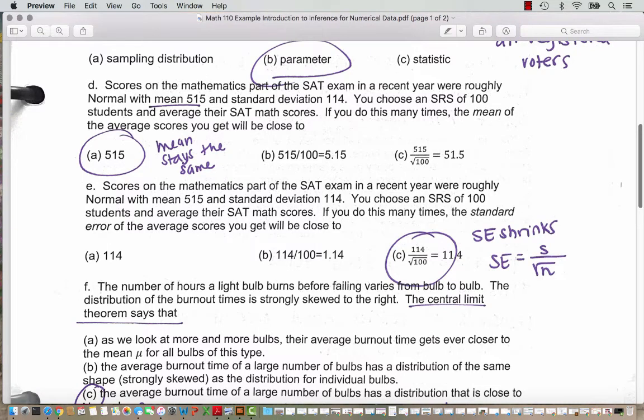Question D. Scores on the mathematics part of the SAT exam in a recent year were roughly normal with mean 515 and standard deviation 114. You choose an SRS, remember that stands for simple random sample, of 100 students, and average their SAT scores. If you do this many times, the mean of the average scores you get will be still close to 515.